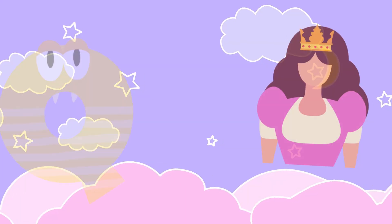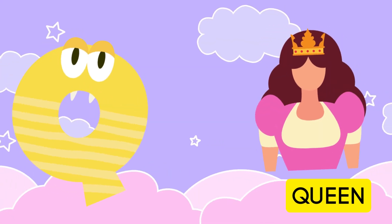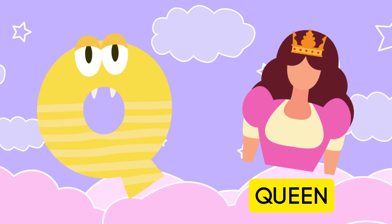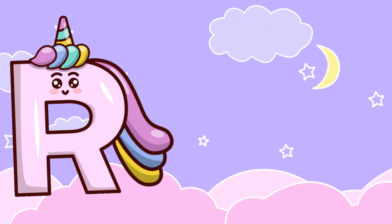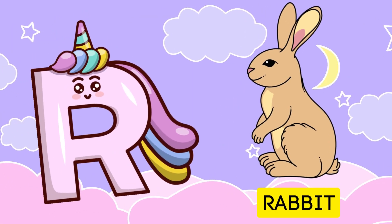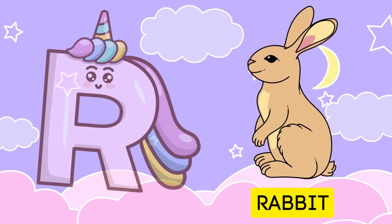Q is for queen, k-k-queen. R is for rabbit, r-r-rabbit.